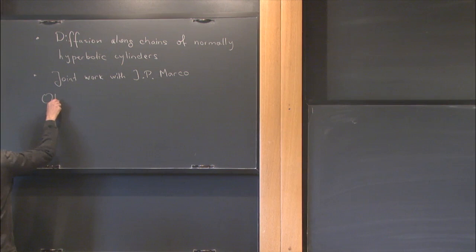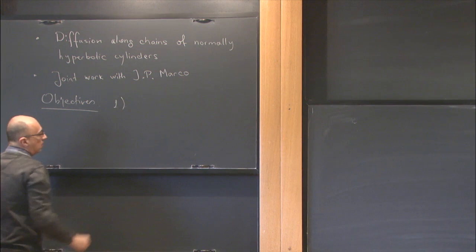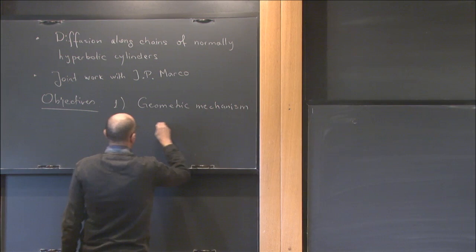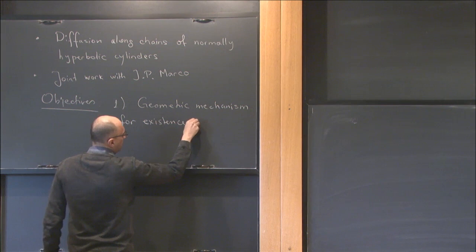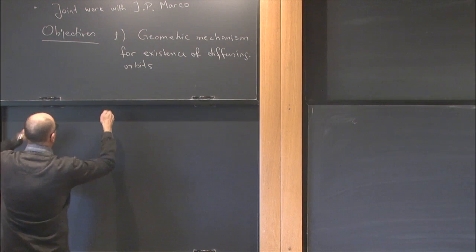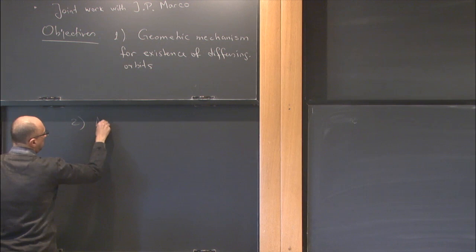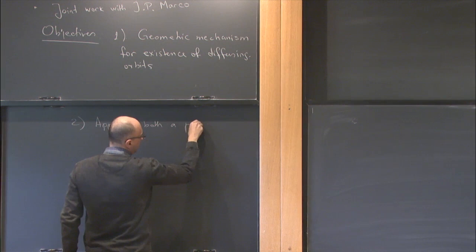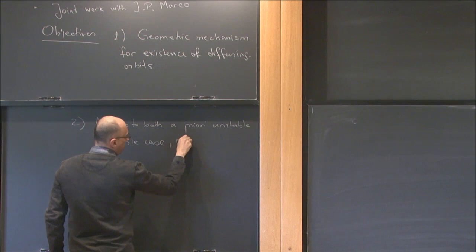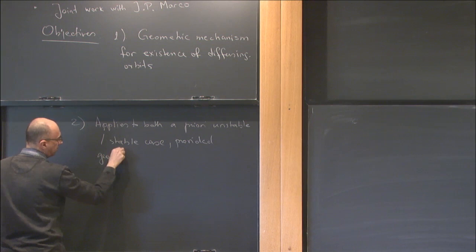This is joint work with Jean-Pierre Marcaux. The objectives of this work are to provide a geometric mechanism for the existence of diffusing orbits.